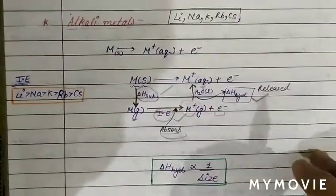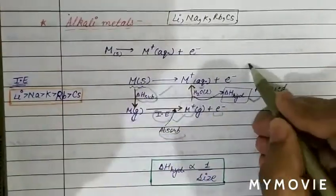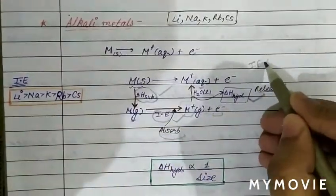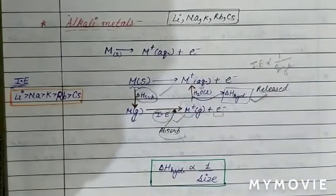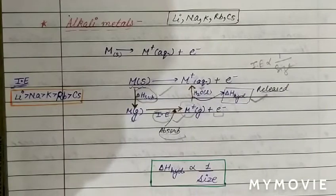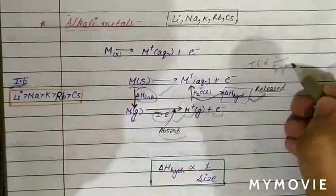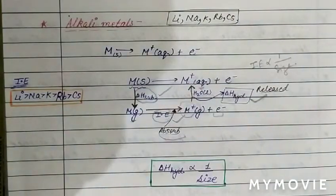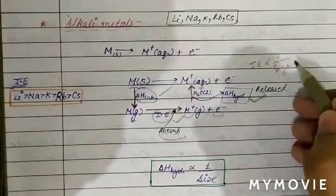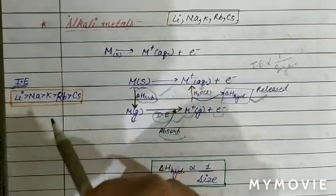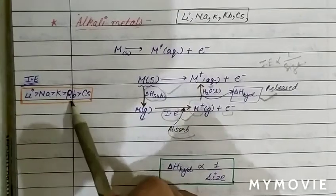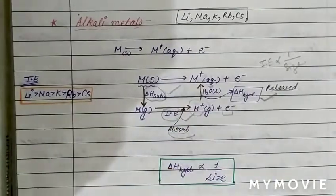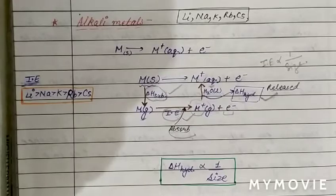As size increases, ionization energy decreases, so ionization energy is inversely proportional to the size of the atom. Lithium has the smallest size and therefore the highest ionization energy, while cesium has the largest size and lowest ionization energy. The order of ionization energy is: Li > Na > K > Rb > Cs.